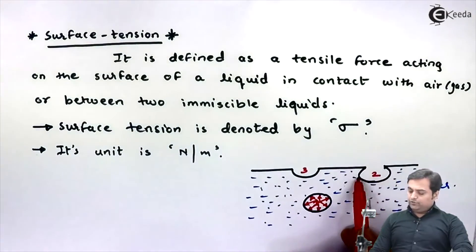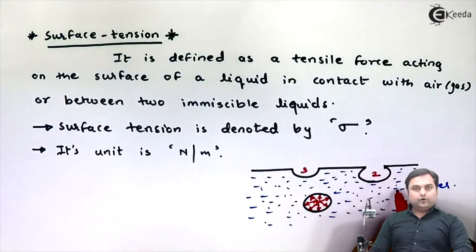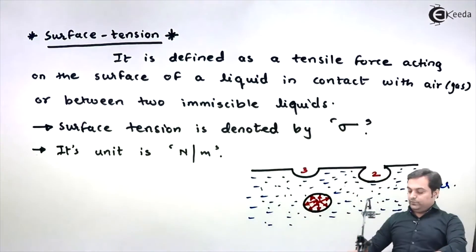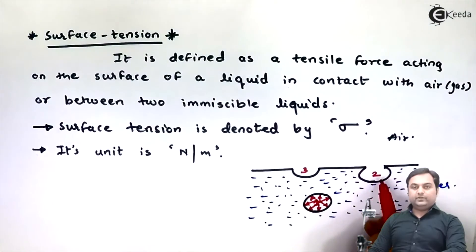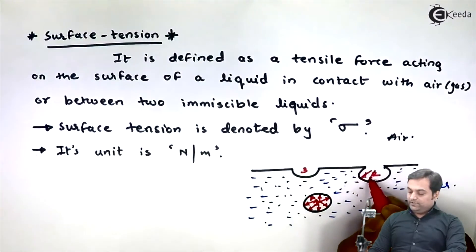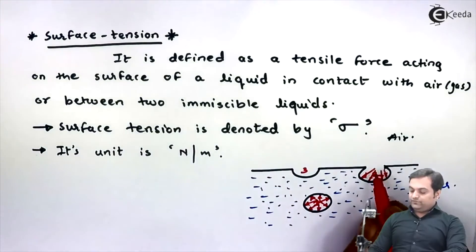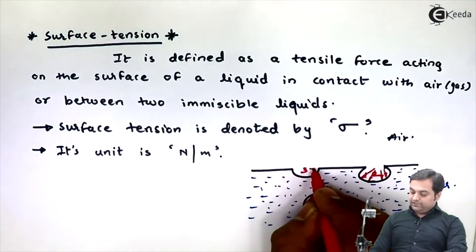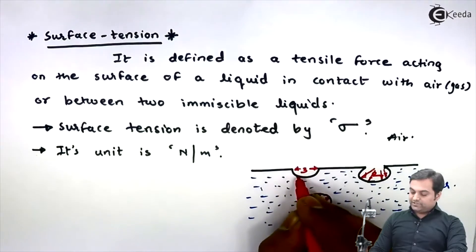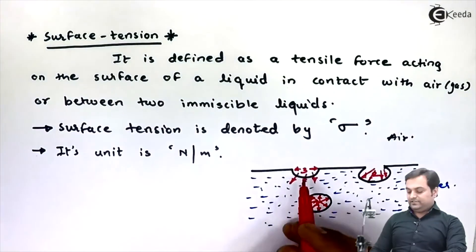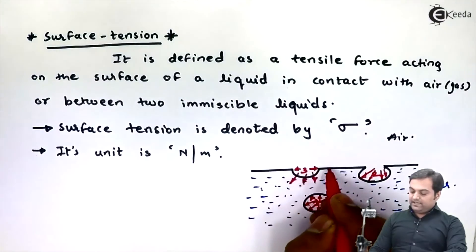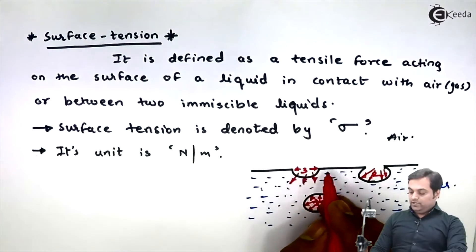Molecule two is not completely immersed in water — some portion of it is in contact with air. The forces acting on it try to pull the molecule downward toward the water, so there is a net resultant downward force. For molecule three, at the surface, there is a force acting parallel to the surface as the surrounding molecules attract it.